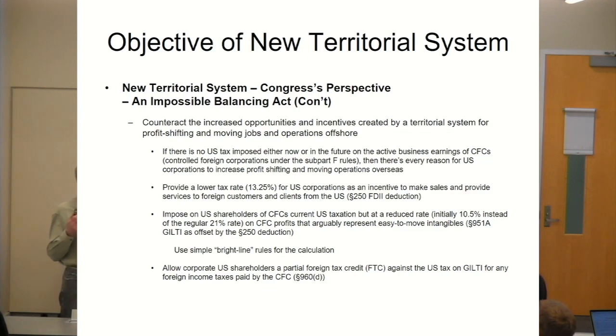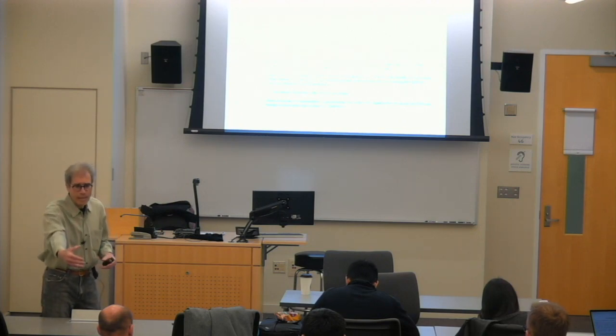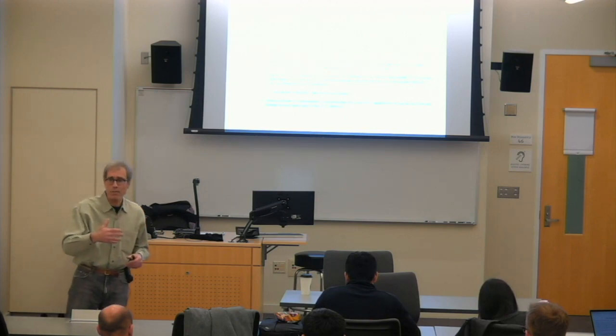So Congress was looking at this and saying, 'Gee, we want to encourage companies to bring back this money because it will create jobs.' So that was one of the factors here. Another one was to recognize that to create a system which does not tax overseas earnings creates a huge incentive to actually move operations and profits outside of the United States to other countries. So they had this pressure: Well, we don't want to be encouraging this, but we obviously are. So what do we do?